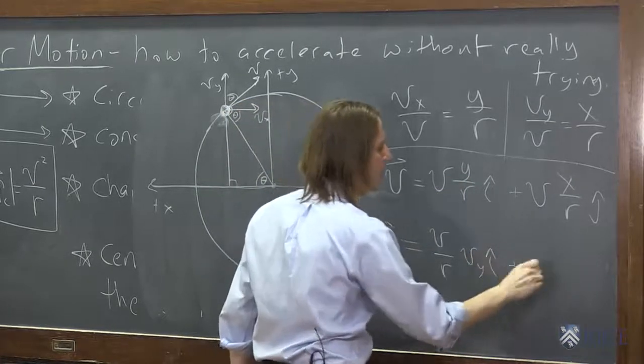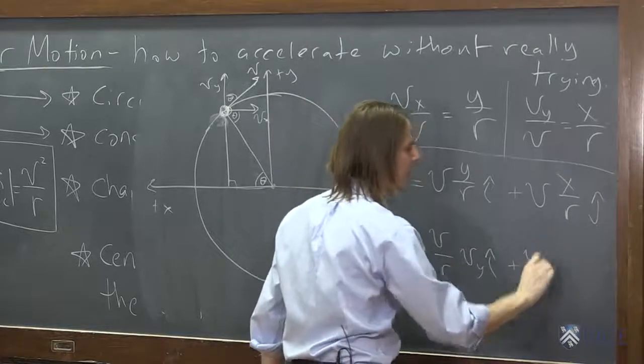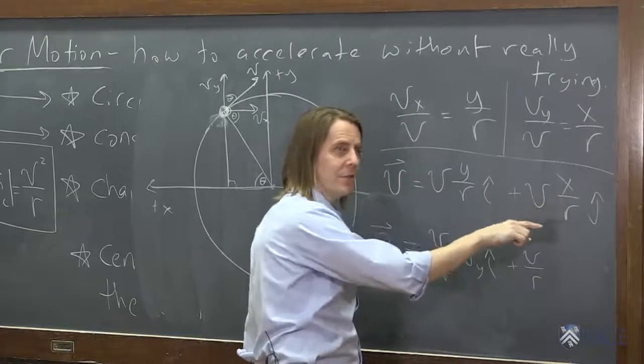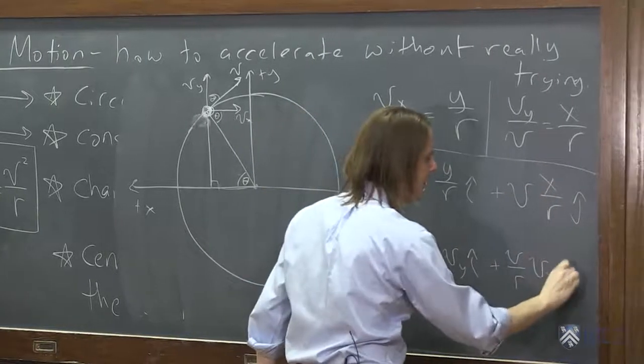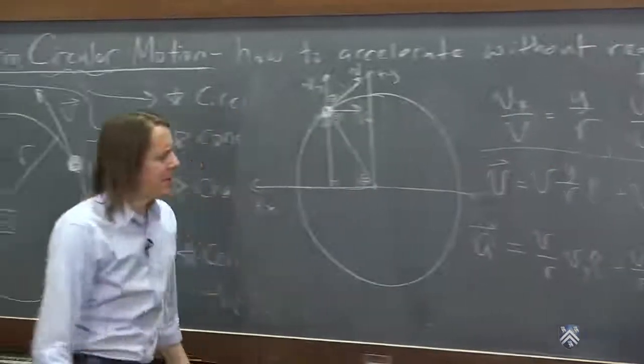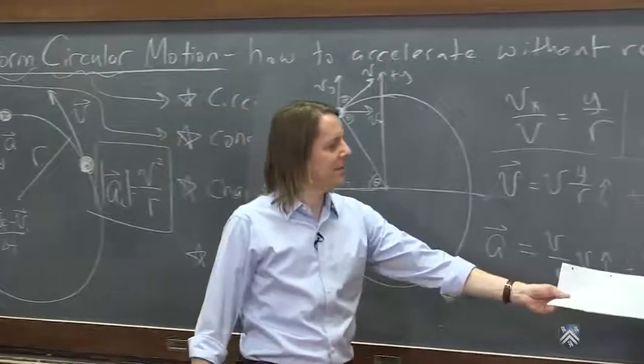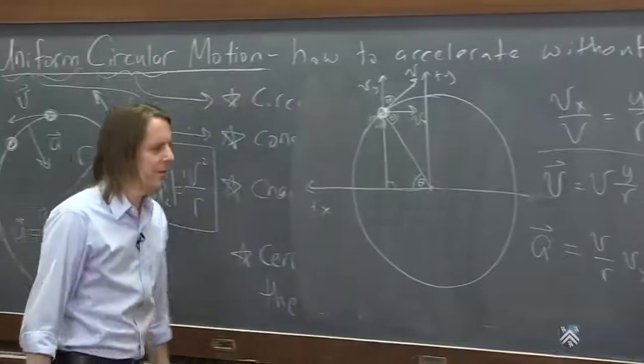Vy, i hat, plus v over r is constant. What's the derivative of the x position? Vx, x, j hat. It almost looks like we're describing the vector, except look, vy is on the i hat and vx is on the j hat. What does that mean? That probably means that a and v, that the acceleration and the velocity vector are not in the same direction.